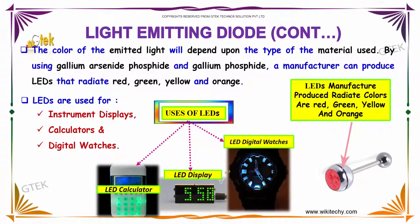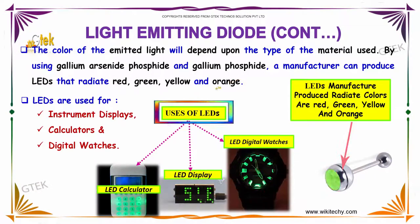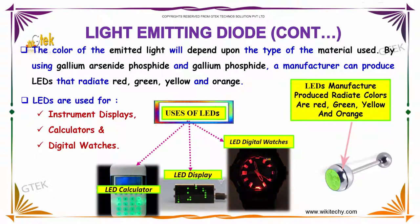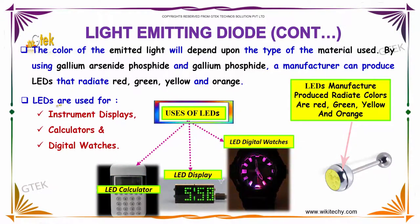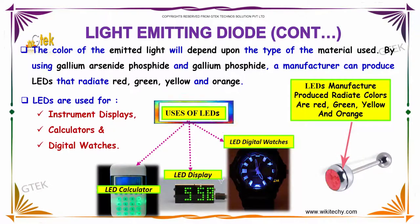The color of the emitted light depends on the type of material used. By using gallium arsenide phosphide and gallium phosphide, a manufacturer can produce red, green, yellow, and orange light. LEDs are used for instrument displays, calculators, and also in digital watches.